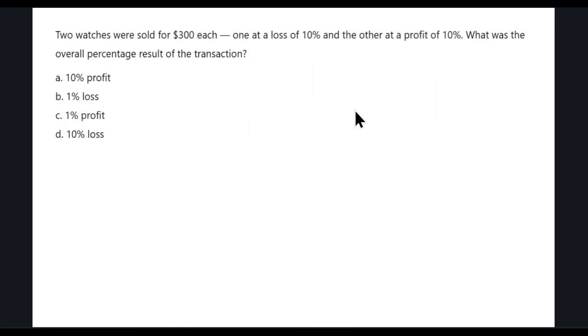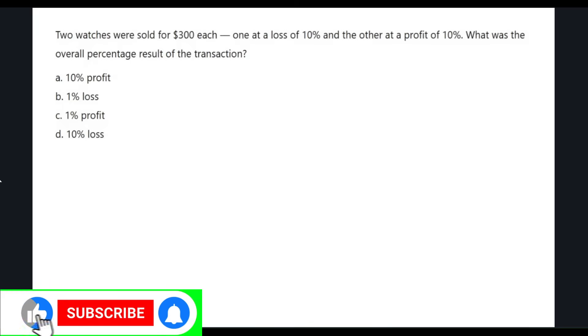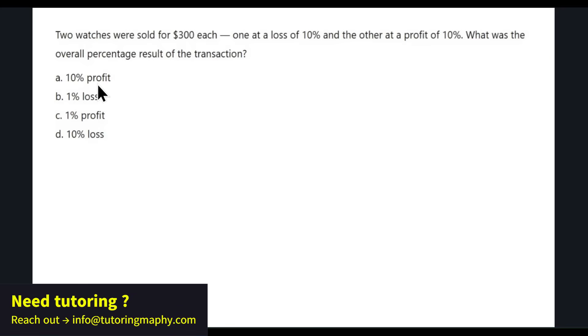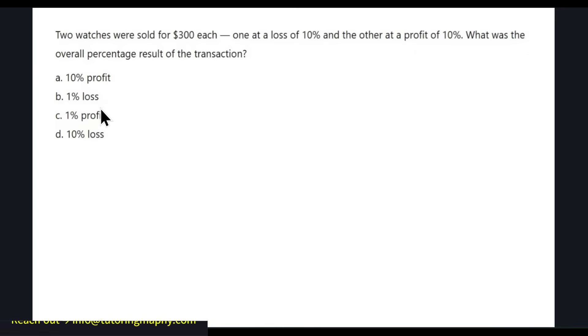This one might look like an innocent question, but it's not. Let's try to do it. Two watches were sold for $300 each, one at a loss of 10%, another at a profit of 10%. What is the overall percentage result of the transaction? This is the selling price. We don't really know the buying price.